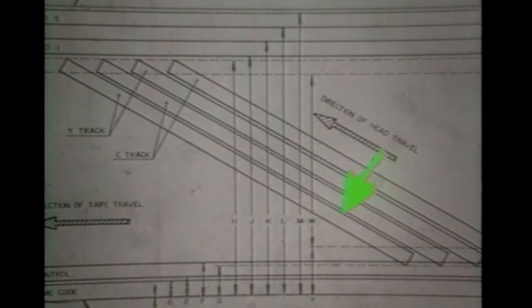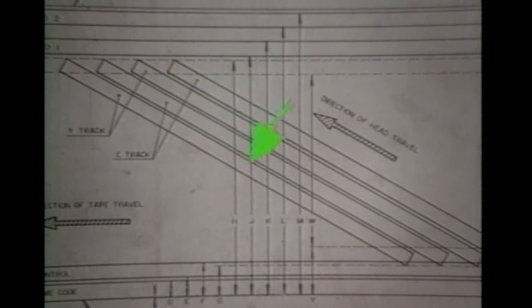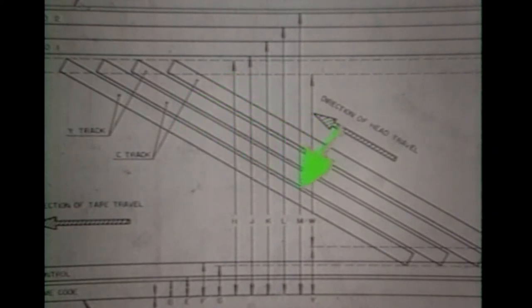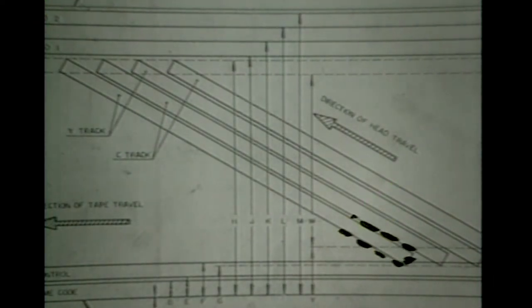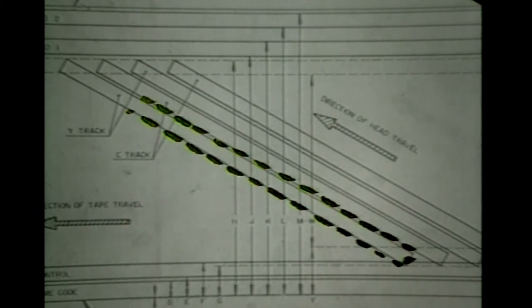The video head traces its path down the recorded video track. How well the video head traces this path is due to the linearity of the tape path. If the tape path is non-linear, the video head will drift off track, resulting in a loss of the playback signal. This, of course, causes a disturbance in the picture monitor.